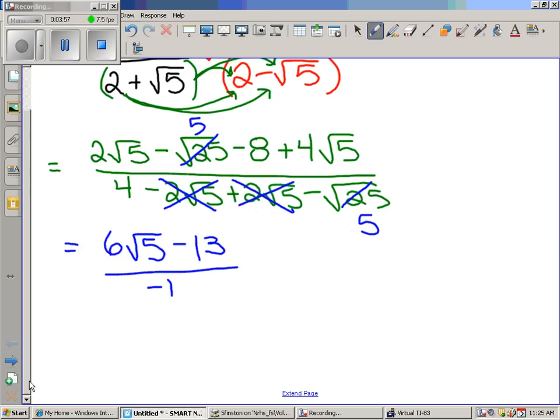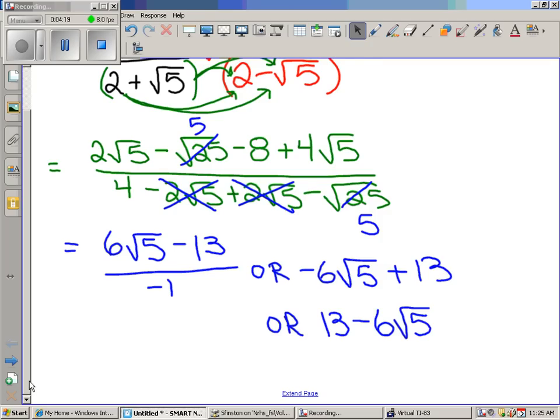So that's one answer we could get. We could rewrite this and say this is the same thing as negative six radical five plus 13. And that can further be rewritten by moving the 13 to the front, saying this is 13 minus six radical five. And there you go. That's the answer. That's how to do it the long way.